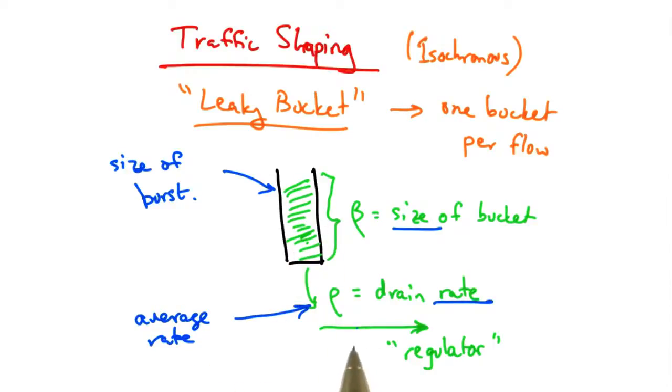The leaky bucket allows flows to periodically burst, and the regulator at the bottom of the leaky bucket ensures that the average rate does not exceed the drain rate of the bucket.